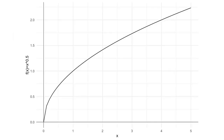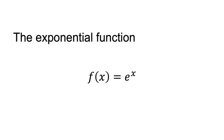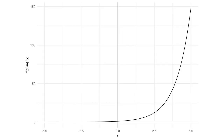For example, a plot of the function f of x equals x to the power of 0.5 is shown here. The exponential function is written as f of x equals e to the power of x. The letter e is a constant approximately equal to 2.71828. It is a special case of exponentiation where the base is e, which is multiplied by itself x times. A plot of the exponential function is shown here.